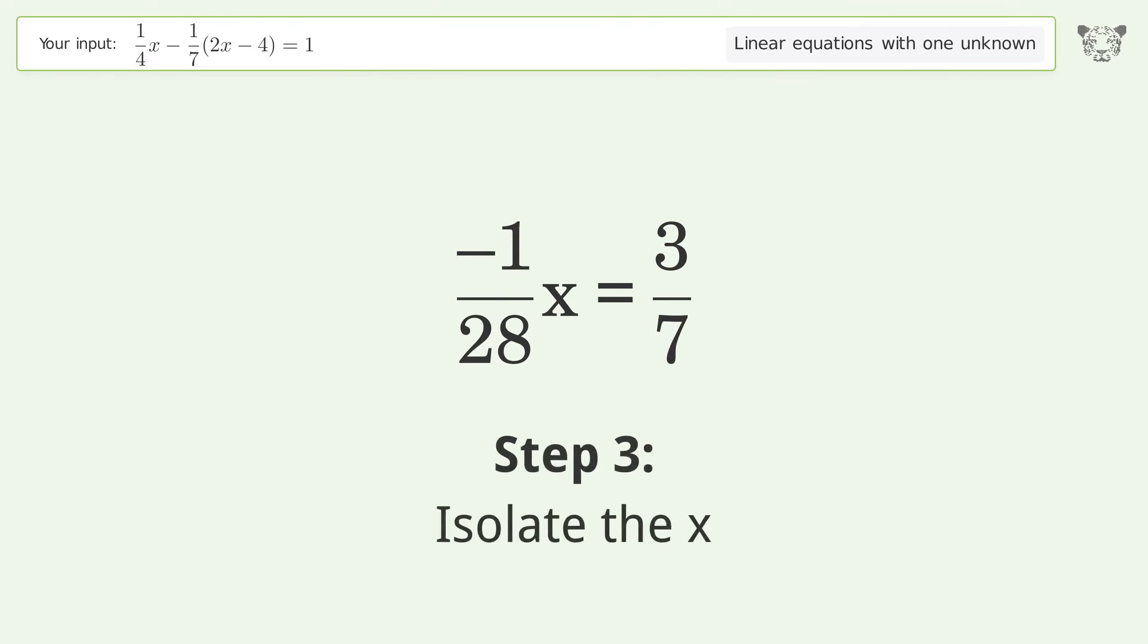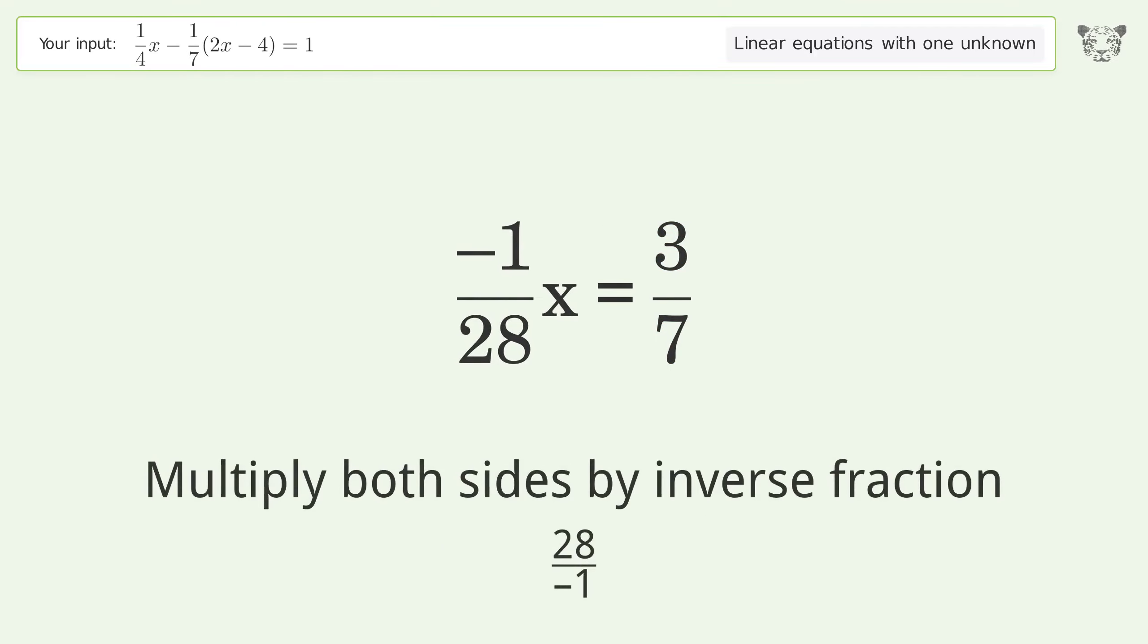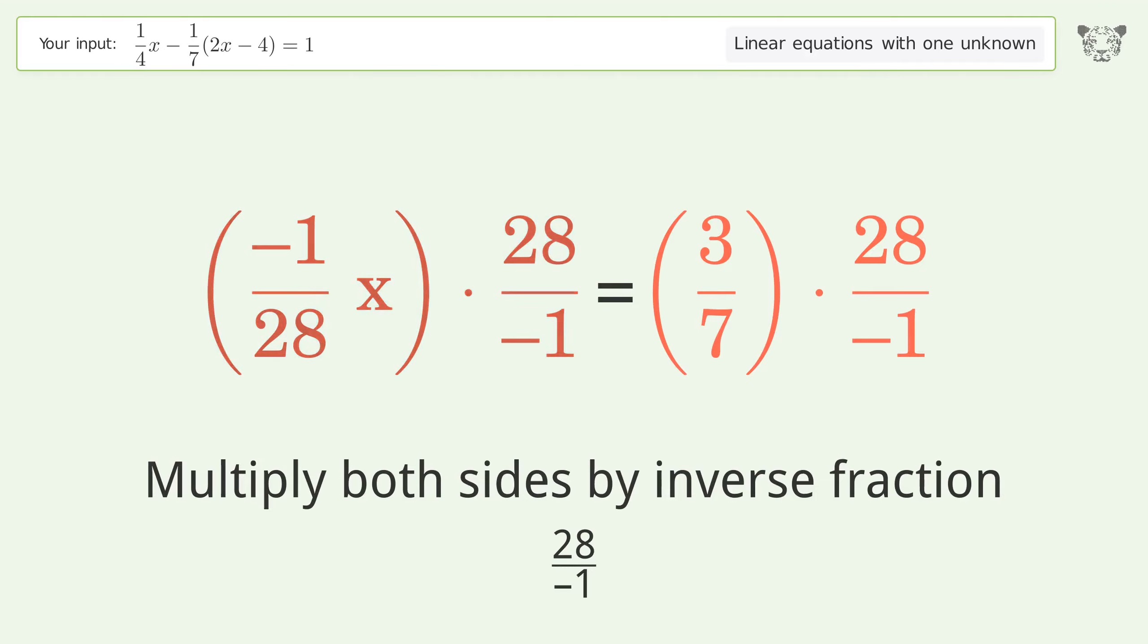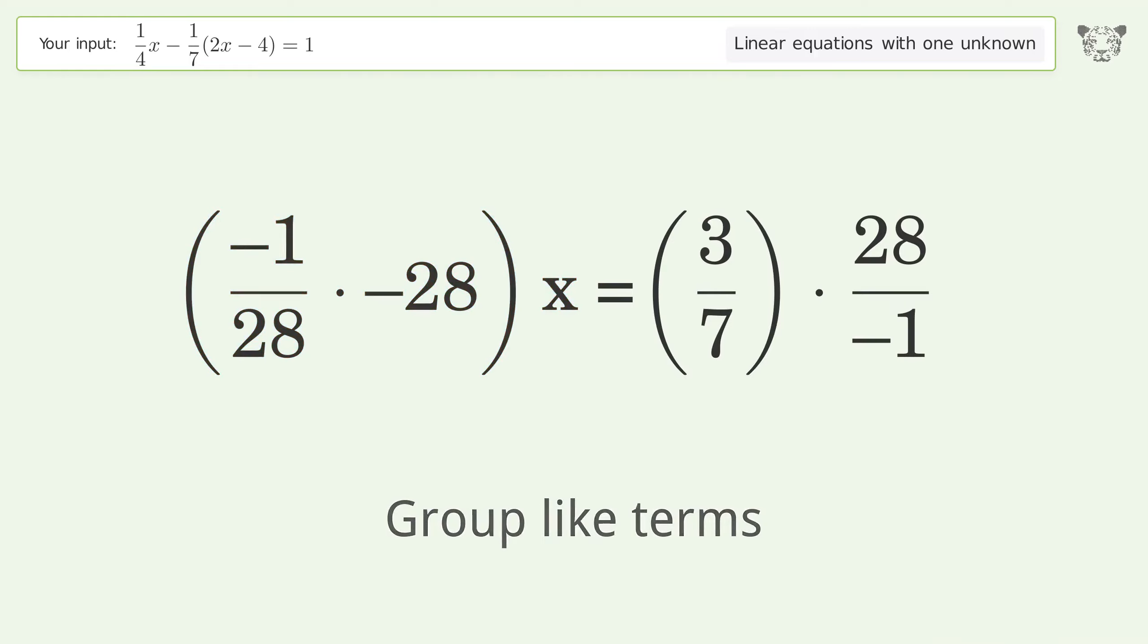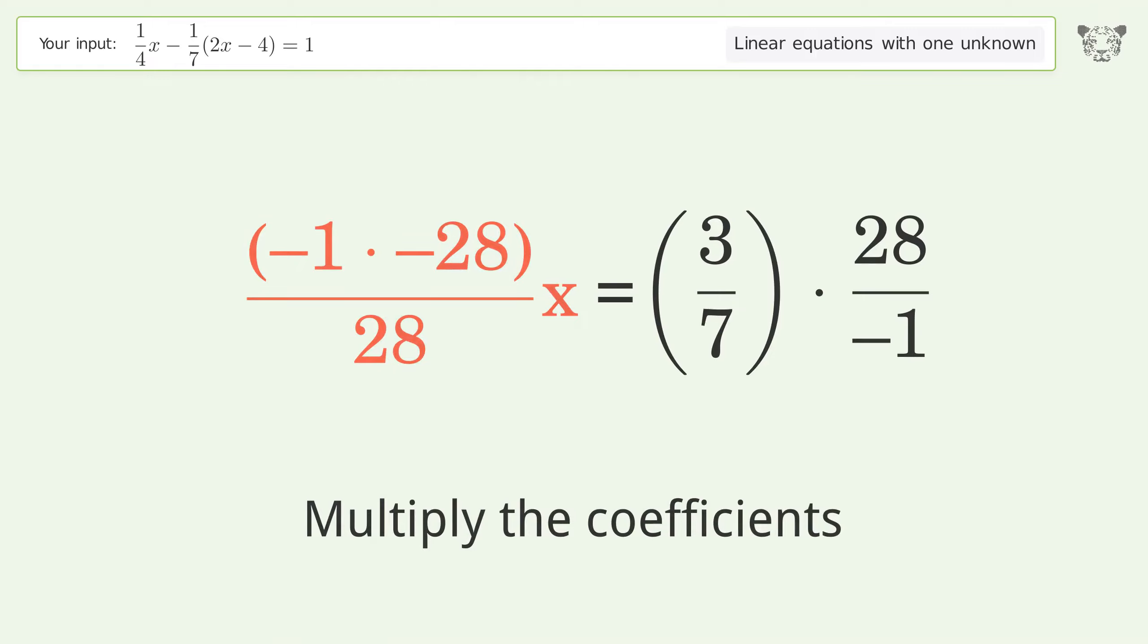Isolate the x. Multiply both sides by the inverse fraction 28 over negative 1. Group like terms, multiply the coefficients, and simplify the arithmetic.